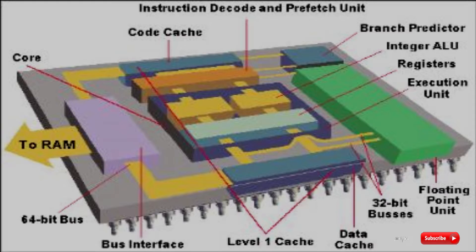Modern processors use either static or dynamic RAM as main memory, with the latter usually accessed via one or more cache levels. These memory address registers are then accessible to view with a memory region examiner such as Cheat Engine or HXD.